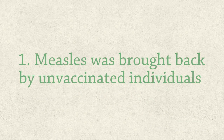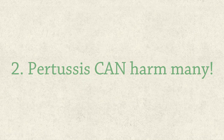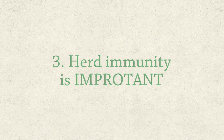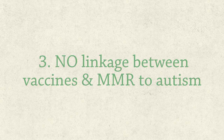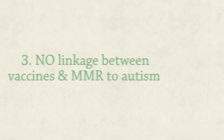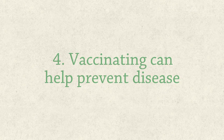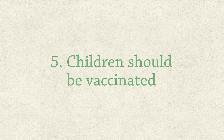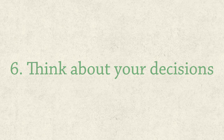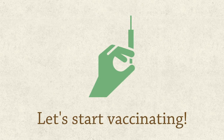Now let's recap what was discussed in this video. Measles was brought back due to unvaccinated individuals. Pertussis can harm many individuals who are too young or can't be vaccinated. Herd immunity is the resistance against a contagious disease when a high proportion of individuals are immune. There is no linkage between vaccinating and autism, or between the MMR vaccine and autism. If you follow the regular vaccine schedule, you can prevent up to 16 different diseases. It is strongly recommended that children be vaccinated, and if you have any further questions, please contact your healthcare provider. Your vaccination decision affects more than just your child — it affects your family, your friends, and your whole community.